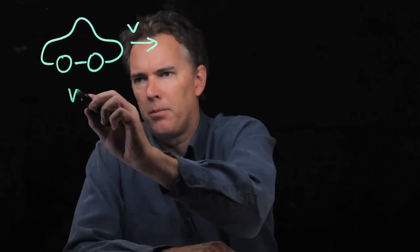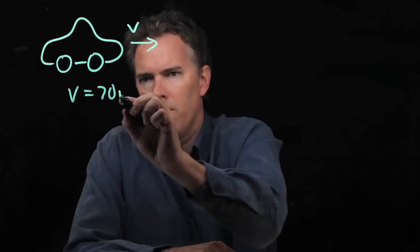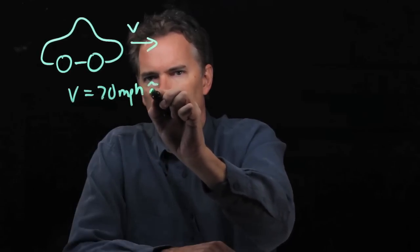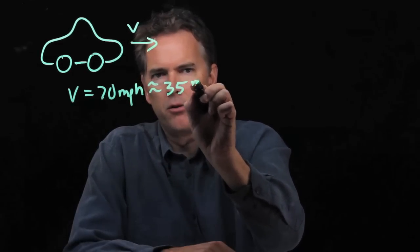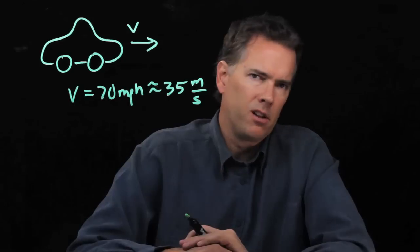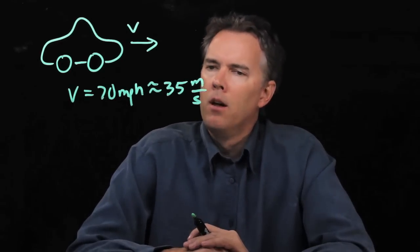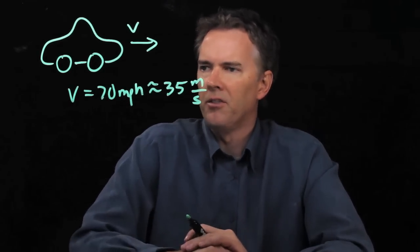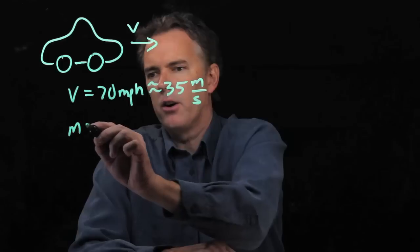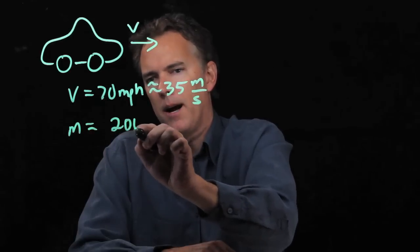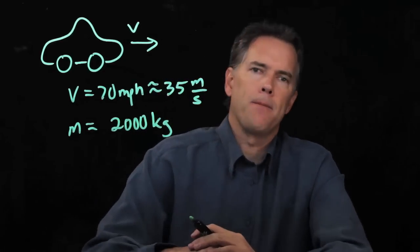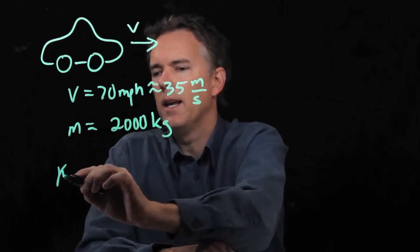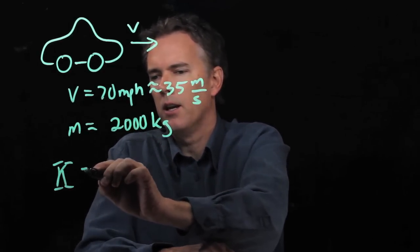So V of 70 miles per hour, we know that that is roughly 35 meters per second. It's not exactly but it's pretty close. So let's just use 35 meters per second and the mass of a car is about 2,000 kilograms. And let's ask the following question: what is the kinetic energy?